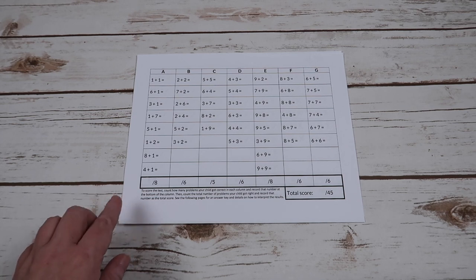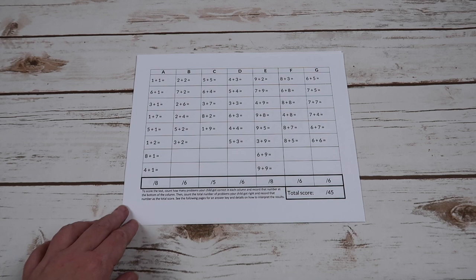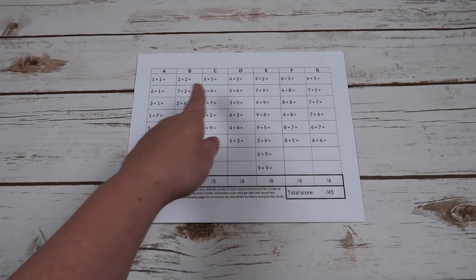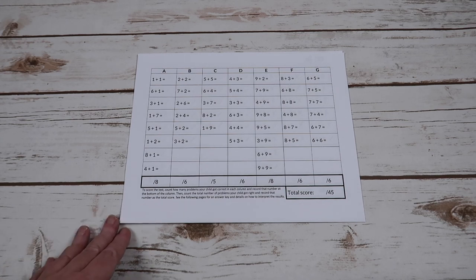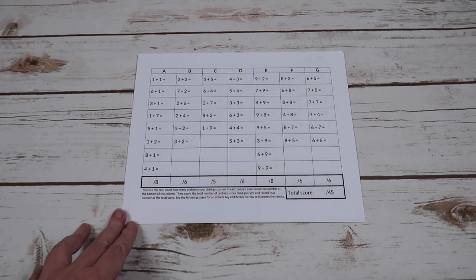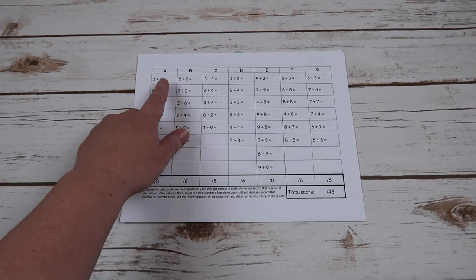They are just printables and you print them out and then you're going to quiz your child. So the way she has you do it is quiz them from left to right. So you're just going to say, what is one plus one? Your child needs to be able to answer in three seconds or less without repeating the question back to you. So by saying, if I said, what is one plus one?